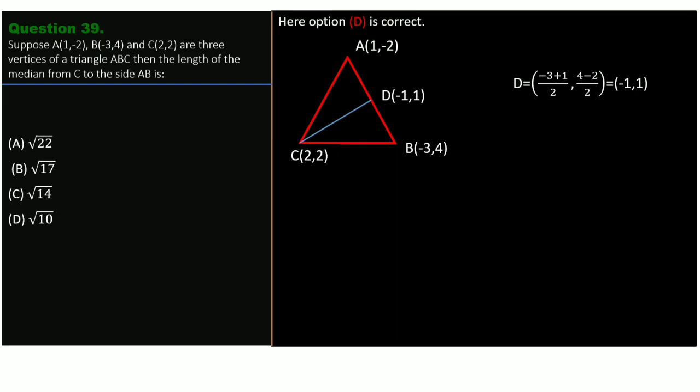Now the coordinate of D is found out. We have to find the length of CD. Applying the distance formula, CD = √((2+1)² + (2-1)²) = √(9+1) = √10. So √10 is the correct answer and option D is correct.